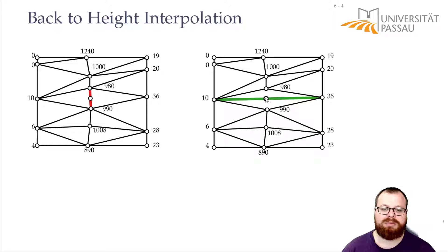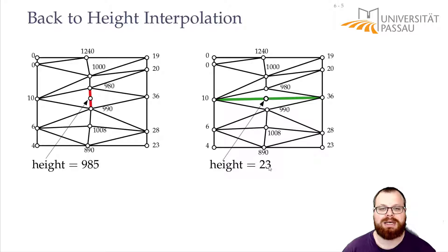Here it's approximately in the middle between the 10 and the 36, so here it would give me height 23. And this is a huge difference. 985 and 23, that's not even closely the same.